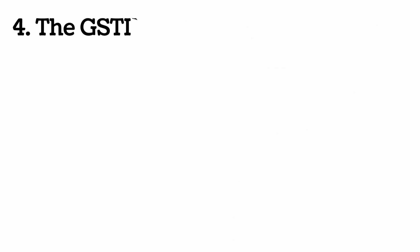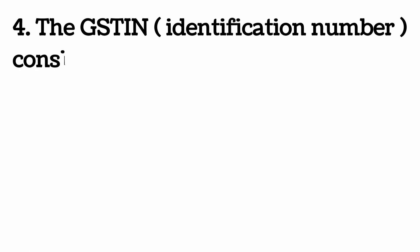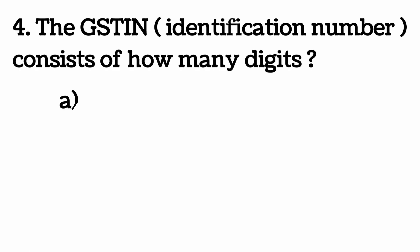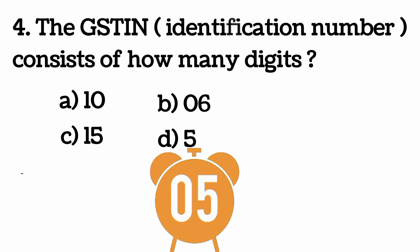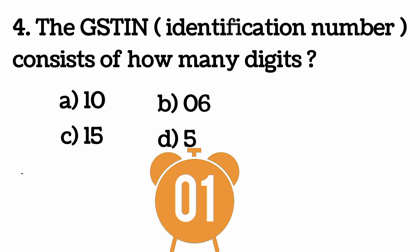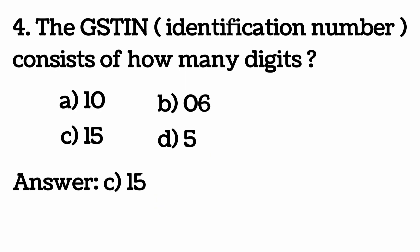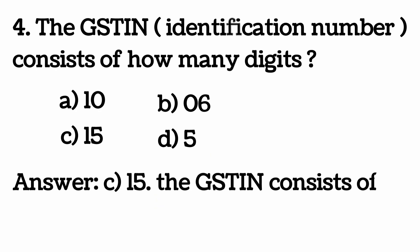The GST Identification Number consists of how many digits? Answer C: 15. The GSTIN consists of 15 digits.